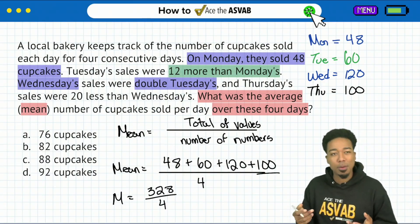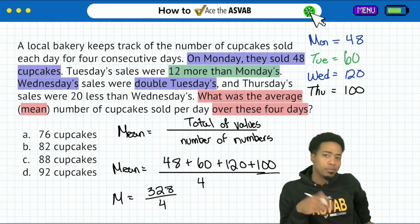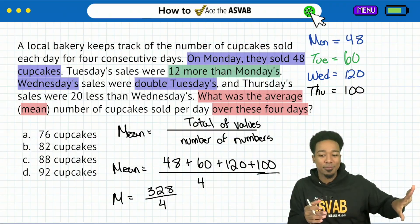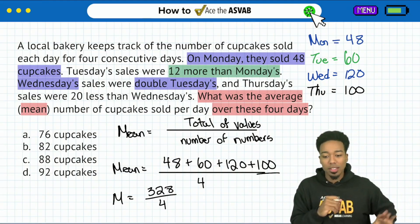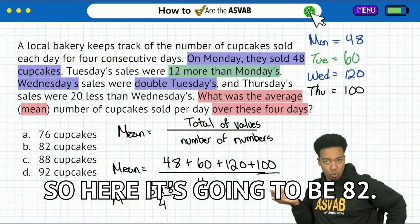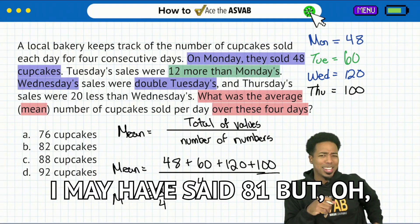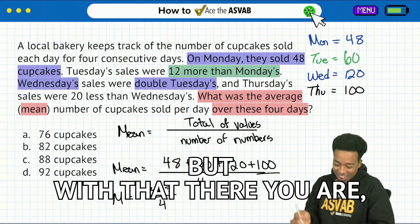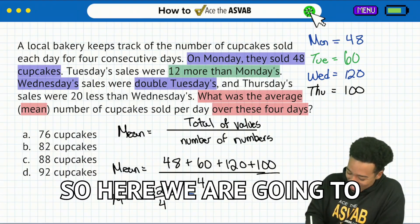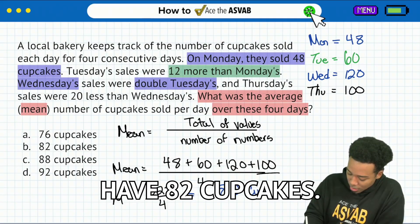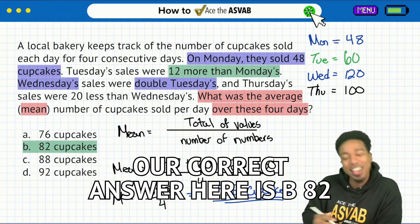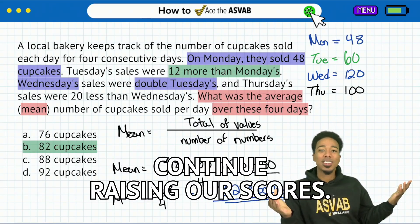And now we're dividing that by four. What's 328 divided by four? Take 320 and divide that by four — that's a clean 80. Then take the 8 and divide that by four, and that is 2. So here it's going to be 82. I may have said 81 earlier, but oh well — it's 82, my party people. So there we are. Our correct answer is 82 cupcakes — answer B. And we're all set to continue raising our scores, everybody.